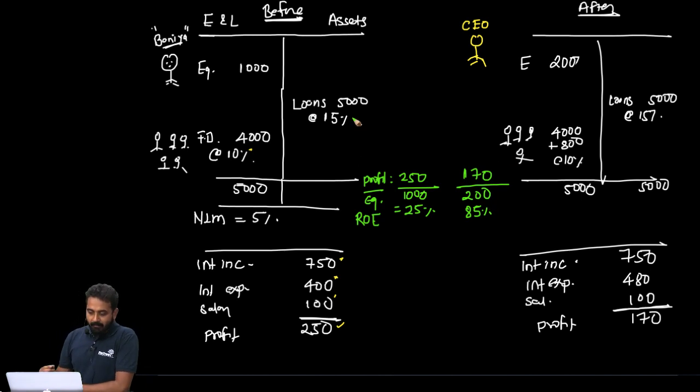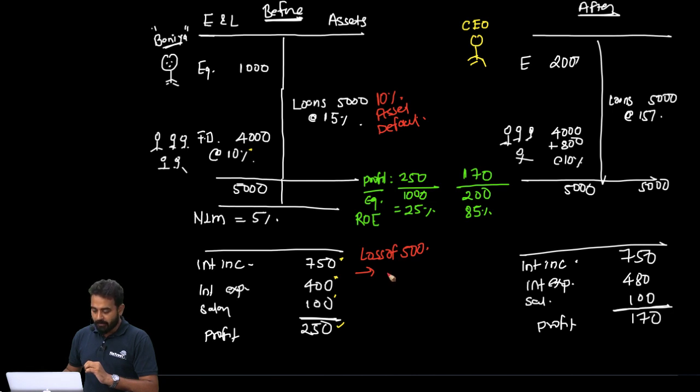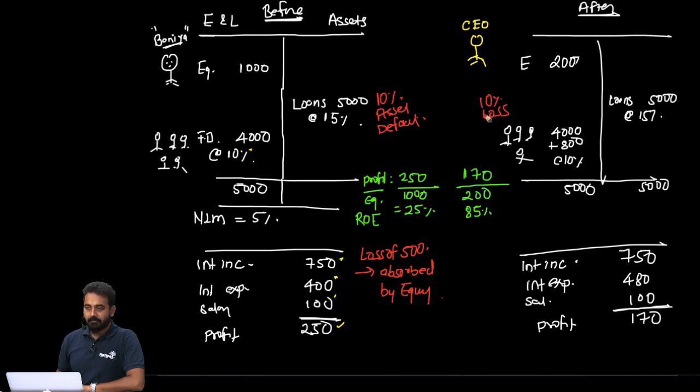Now imagine a situation. Imagine now, if this is our before and after scenario, in one particular year something goes wrong and there is a default of 10% of assets, 10% asset default. So total default of how much? 500. Now if there is a loss of 500, loss of 500, who will absorb those losses? Equity shareholder. So absorbed by equity shareholders. But here, if there is a 10% loss, there is a loss of 500, 200 would be absorbed by equity. Agree? Now 300 is still pending. So you call up the owner of the bank, you tell him you have to deposit 300.